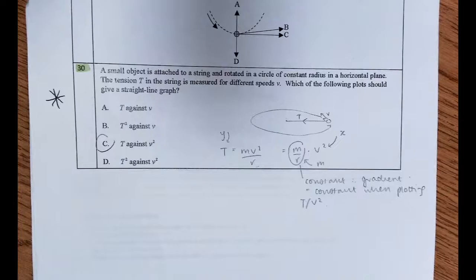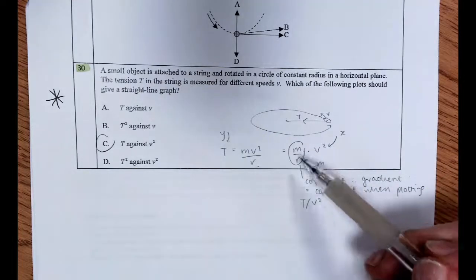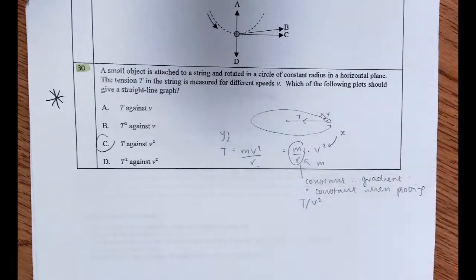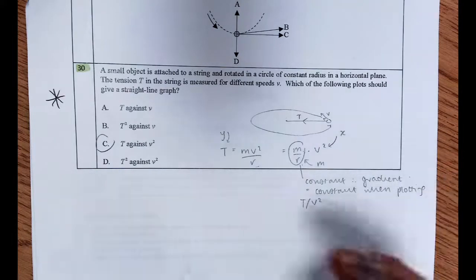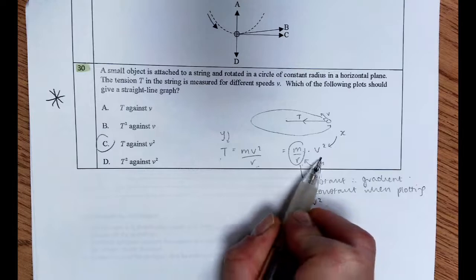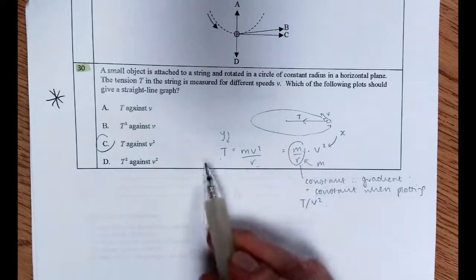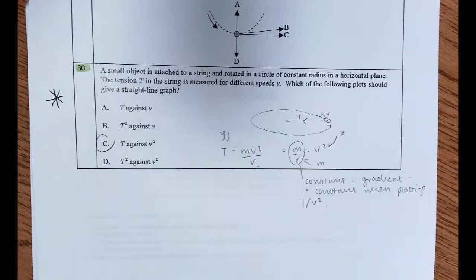Now if I want a straight line graph, I want a constant gradient. The mass of the object is constant. The radius is constant. It's the speed that's being changed. So therefore, if this is y, this is m, and this is x, to get a straight line graph, I need to plot t against v squared.